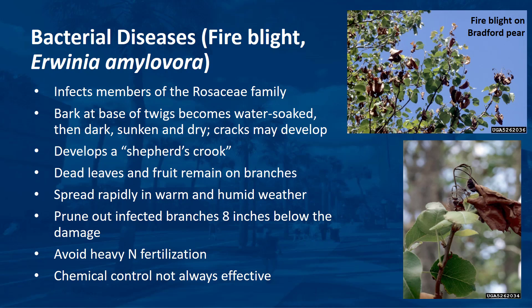Fire blight infects members of the rosaceae family, which includes numerous species of trees and shrubs in landscapes. The bark at the base of blighted twigs becomes water-soaked, then dark, sunken, and dry, and cracks may develop at the edge of the sunken area. Young twigs and branches die from the terminal end and appear burned or deep rust-colored. Branches may be bent, resembling what is commonly referred to as shepherd's crook. Dead leaves and fruit remain on the branches. The bacteria spread rapidly through the plant tissue in warm, humid weather.